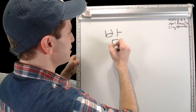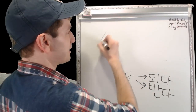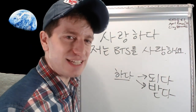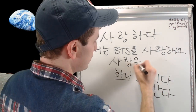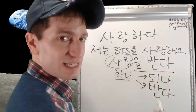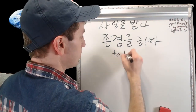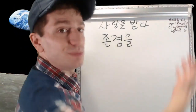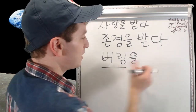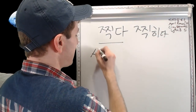Some verbs become passive by using 받다, not by changing into 되다. One example is 사랑하다 — 저는 BTS를 사랑해요 (I love BTS — active). If you want to say 'BTS is loved,' you say 사랑을 받다 — literally 'to receive love,' used as passive 'to be loved.' Similarly, 존경하다 (to respect) becomes 존경을 받다 (to be respected — to receive respect), and 버리다 (to throw away) becomes 버림을 받다 (to be thrown away — to receive throwing away). You just have to memorize these.